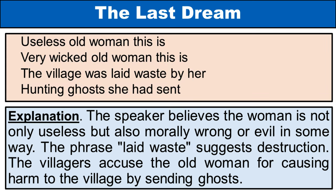Poem lines: 'Useless old woman this is. Very wicked old woman this is. The village was laid waste by her. Hunting ghosts she had sent.' Explanation: The speaker believes the woman is not only useless but also morally wrong or evil in some way. The phrase 'laid waste' suggests destruction. The villagers accuse the old woman of causing harm to the village by sending ghosts.